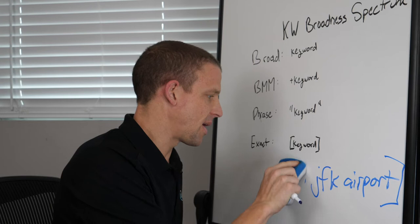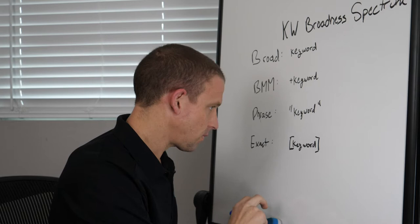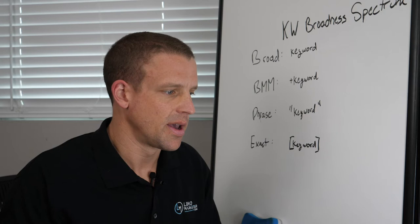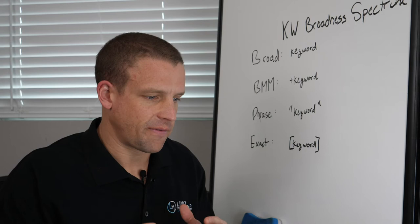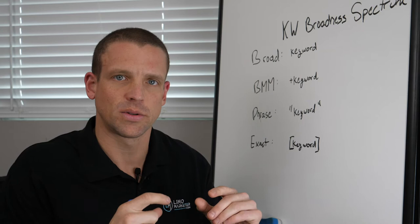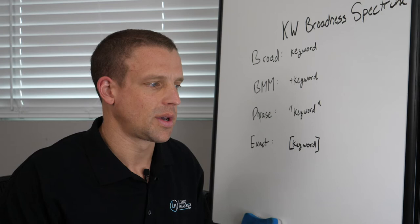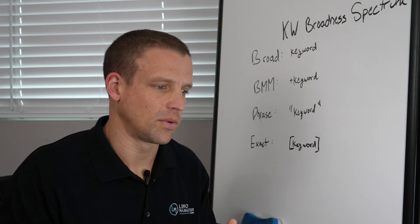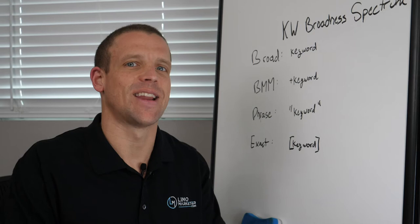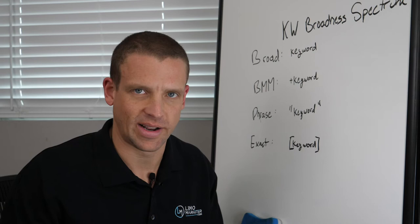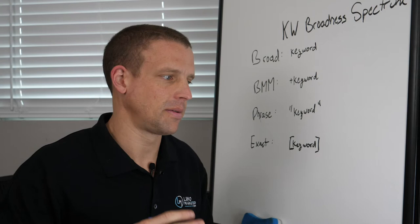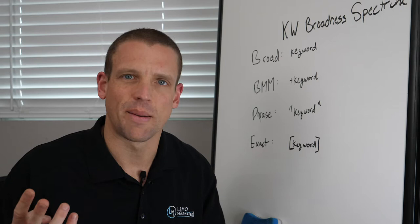Today I want to talk about the keyword broadness spectrum. There are actually four different match types. When Google was creating Google Ads, they knew they needed to figure out a way to use different types of keywords to match up with different types of search queries. Because here's what's so complex about this: they say now that still 15 to 20% of searches that happen have never happened before. Take a moment to think about how crazy that is — probably trillions of searches and 15 to 20% are still unique.